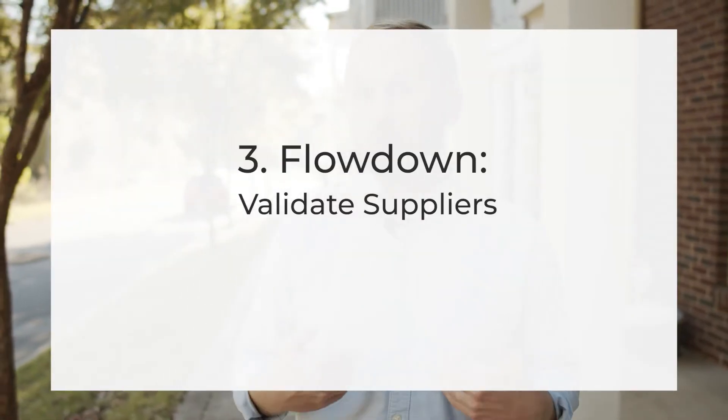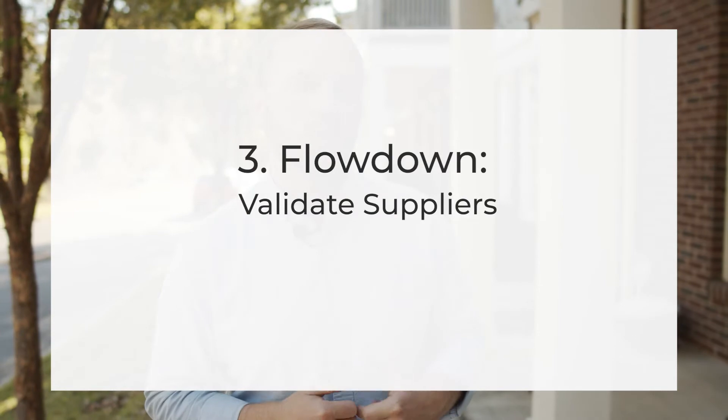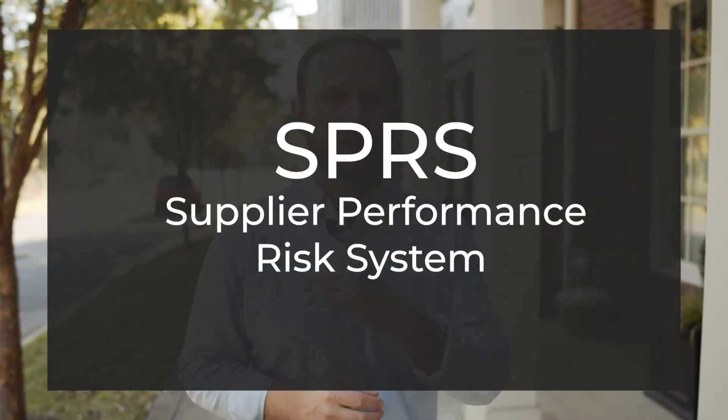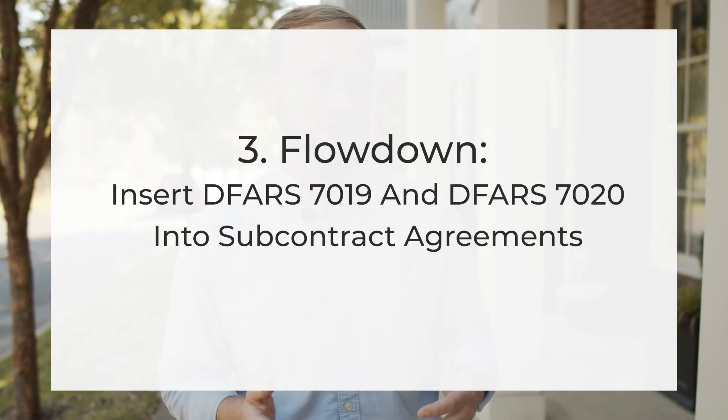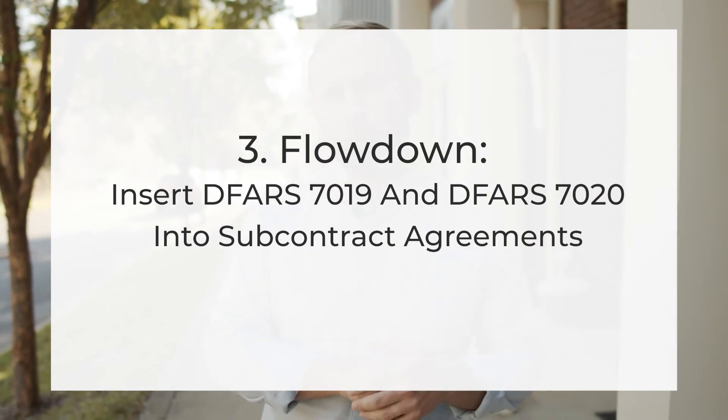The third thing is flow-down requirements. Not only do you need to submit your assessments into SPRS, you also need to make sure that your subcontractors, your vendors, your suppliers are also submitting their assessments into SPRS, which is the Supplier Performance Risk System. Many large prime contractors like Lockheed, Raytheon, etc. have started to ask their subcontractors through mass emails and memos to their vendor systems to essentially ask if they have met these requirements yet or plan to. And lastly, on the flow-down piece, you're going to need to make sure that your subcontractor agreements — those documents themselves — have inserted in them the language from DFARS 7019 and 7020.